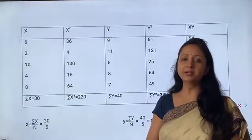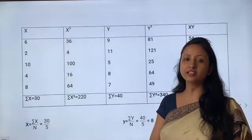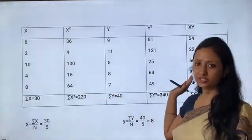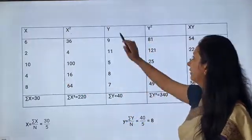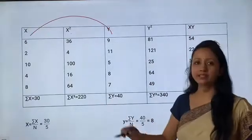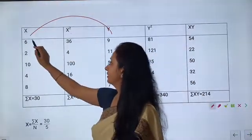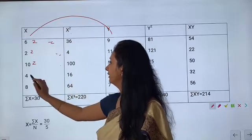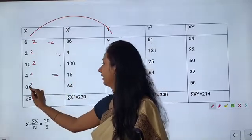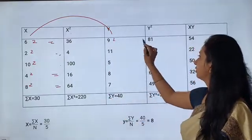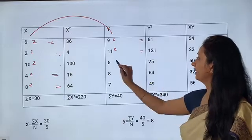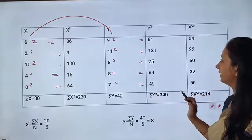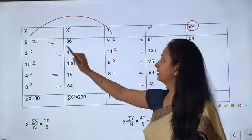In the original value method, first we need to find the squares of the original values given. So first of all we will make 5 columns in the solution table: x, x², y, y², and xy. X and y are copied from the question. X²: 6²=36, 2²=4, 10²=100, 4²=16, 8²=64, 9²=81, 11²=121, 5²=25, 8²=64, 7²=49.